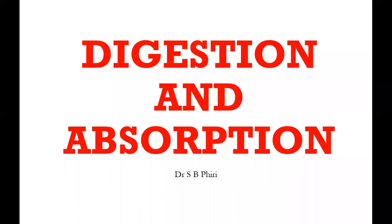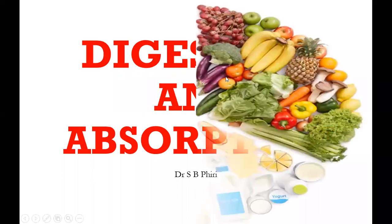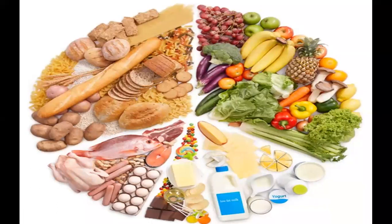This is the last lecture in GIT. We'll be discussing digestion and absorption. This slide is displaying different types of foods that we normally eat, and it contains different types of macromolecules that will be digested in the GIT.